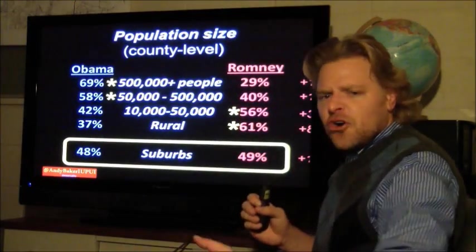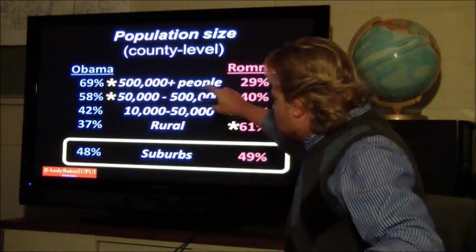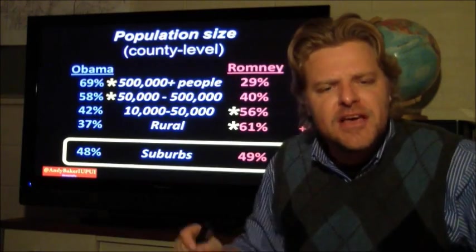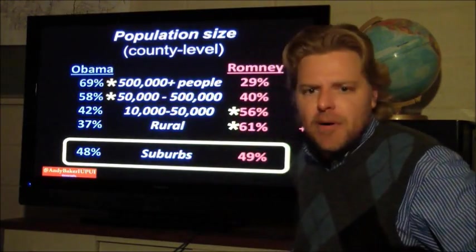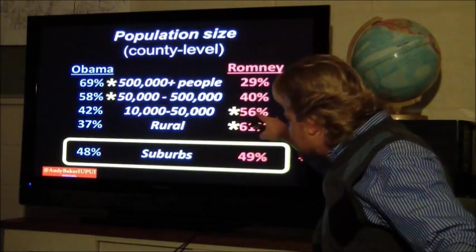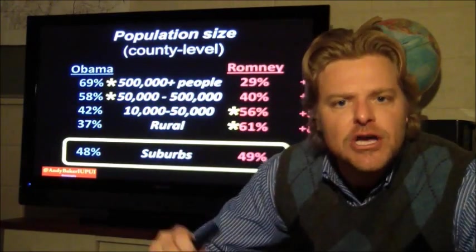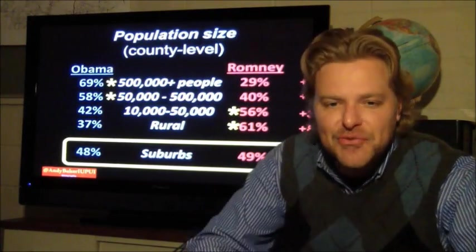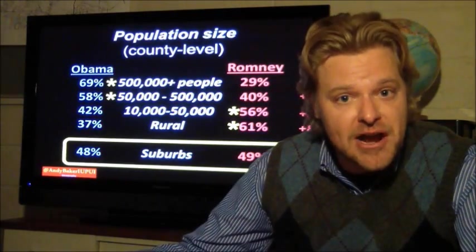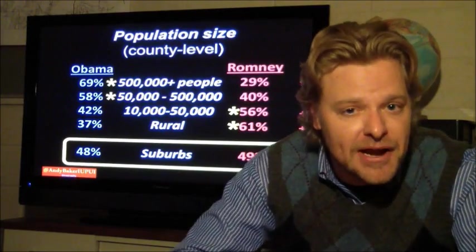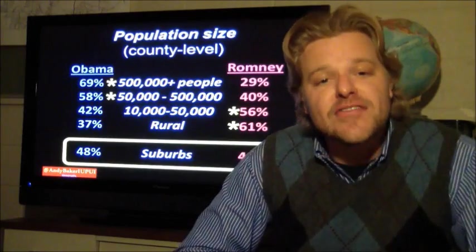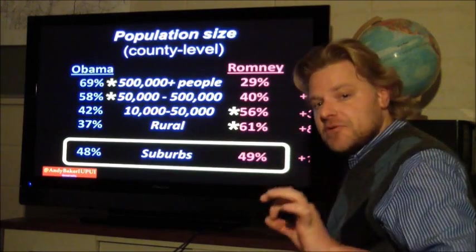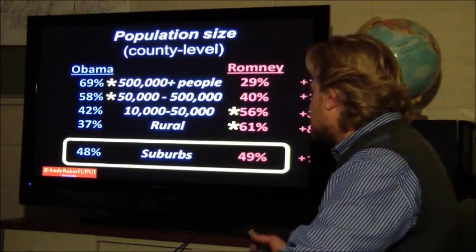Going deeper into urban versus rural at the county level: counties with 500,000 people or more are Democrat strongholds — we can pretty much predict Democrats will win urban areas, with Obama winning 69%. However, smaller places of 10,000 to 50,000, or rural areas, are more Republican. So urban versus rural is another key theme. The purple in-between areas — suburban areas — are very much 50-50, and that's where a lot of the 2014 and 2016 campaigning will be focused.